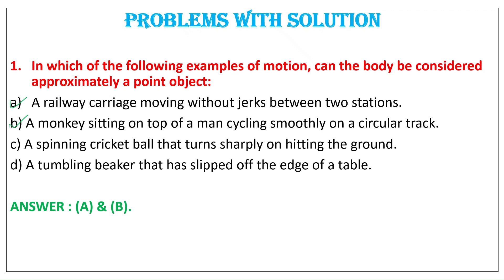In A, the size of a carriage is very small as compared to the distance between two stations. Therefore, the carriage can be treated as a point-sized object. In B, the size of a monkey is very small as compared to the size of a circular track. Therefore, the monkey can be considered as a point-sized object on the track.